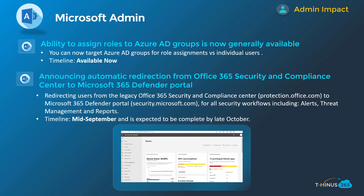Getting into the admin section, you now have the ability to assign roles to Azure AD groups — that's now generally available. Previously you could only do that on an individual user basis. Now you can do things like assigning the User Administrator role to a group of people at once. Note that this is only available for Azure AD P1 or P2 subscriptions.